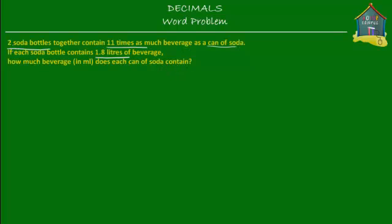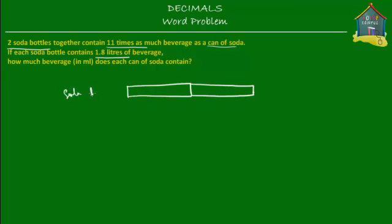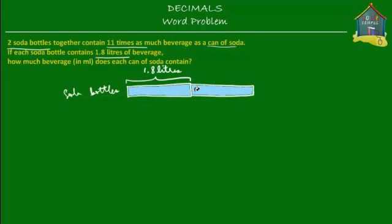What we are given is two soda bottles which are 1.8 liters each. So this is one bottle of soda which is 1.8 liters, and this is one more soda bottle which is also 1.8 liters. One block is 1.8 liters. Let's put some color in this — let's say it's blue. Both of these are blue because they are identical.